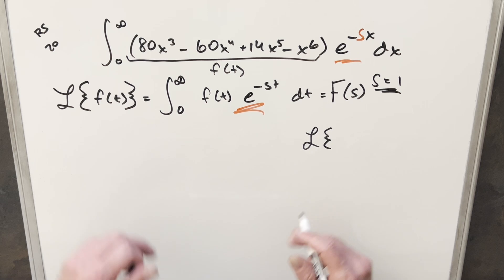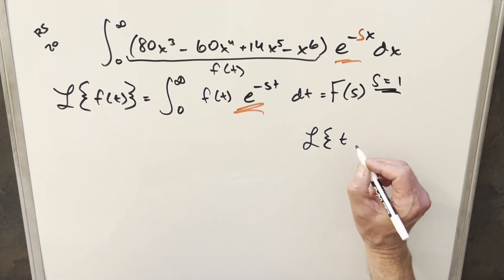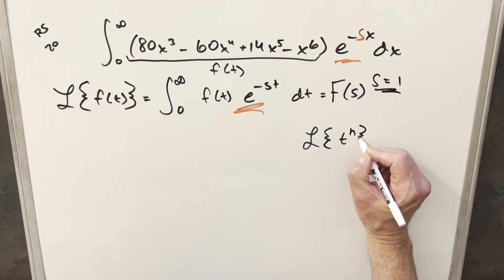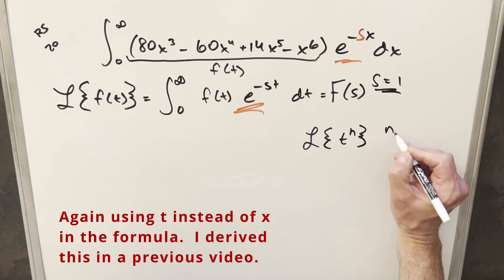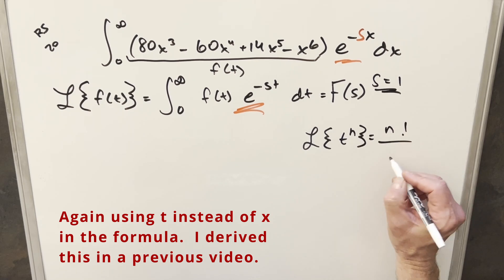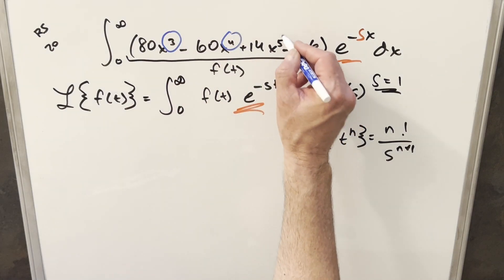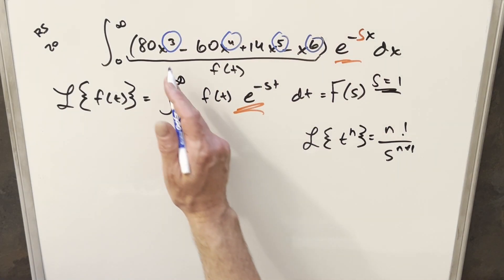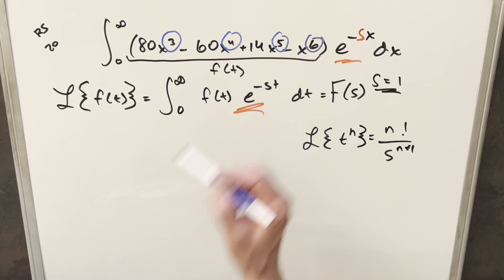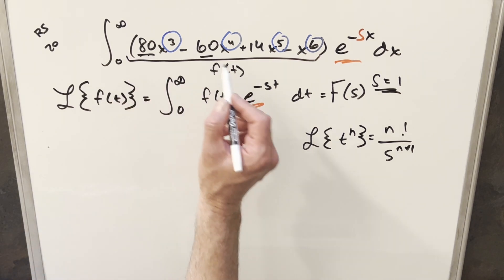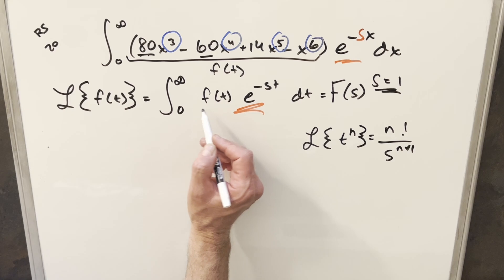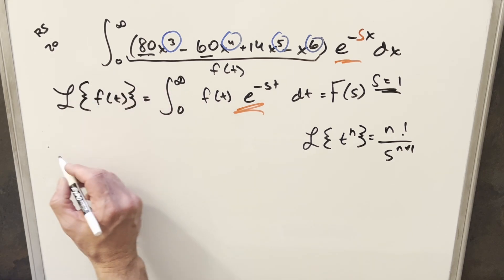We have this formula we can use on just one term. If we have the Laplace transform of t^n, this is just going to be the same thing as n! over s^(n+1). So using this, we can go right to a solution, or the first step towards a solution, where the n value in our polynomial is just going to be 3, 4, 5, 6. Just keep in mind that all these constant values in front would just come outside, because this is an integral, so the constant values are pulled out and those aren't changed.